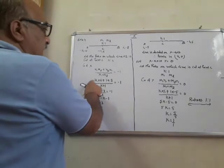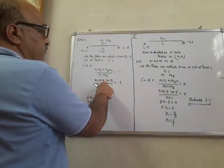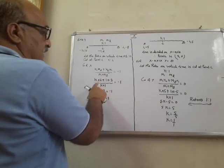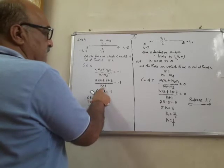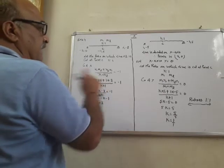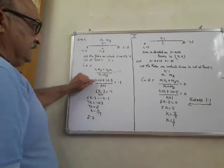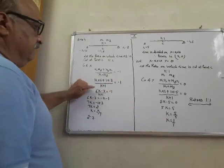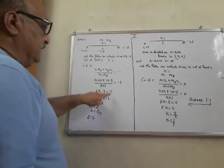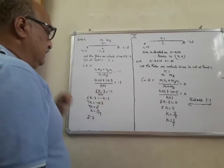K into 6, plus 1 into minus 3, upon k plus 1, equal to minus 1. So: 6k minus 3 equals minus k minus 1.